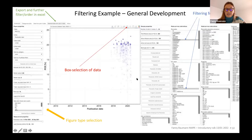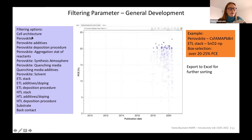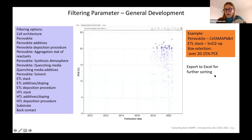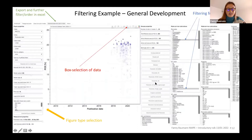Here is an image of what it looks like inside the database — this is the general development tab, which continues for about three more screen widths to the right. You can filter on a certain perovskite composition and a certain electron transport layer, in this case tin dioxide nanoparticles, and then select a box selection with efficiencies only between 20 and 25%. After making the selection, you can export the results to Excel for further sorting. These functions are very easy to use.